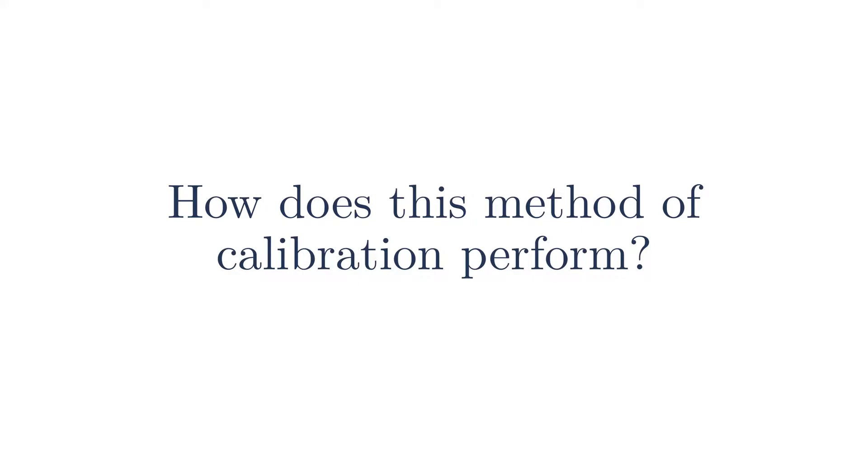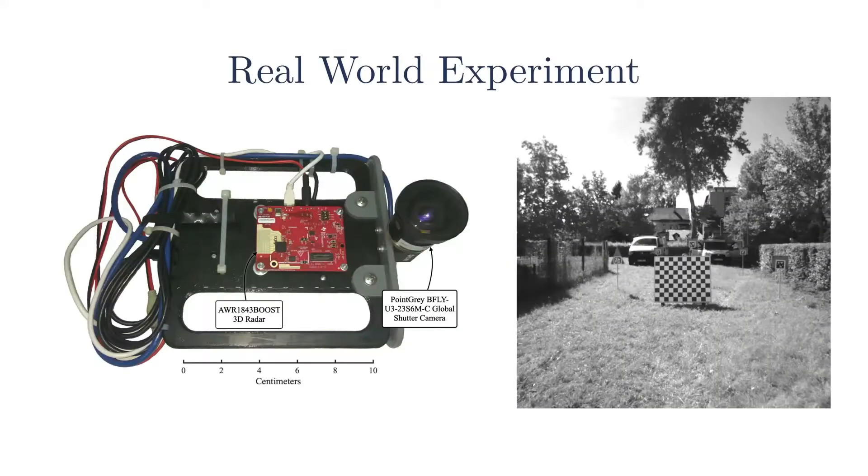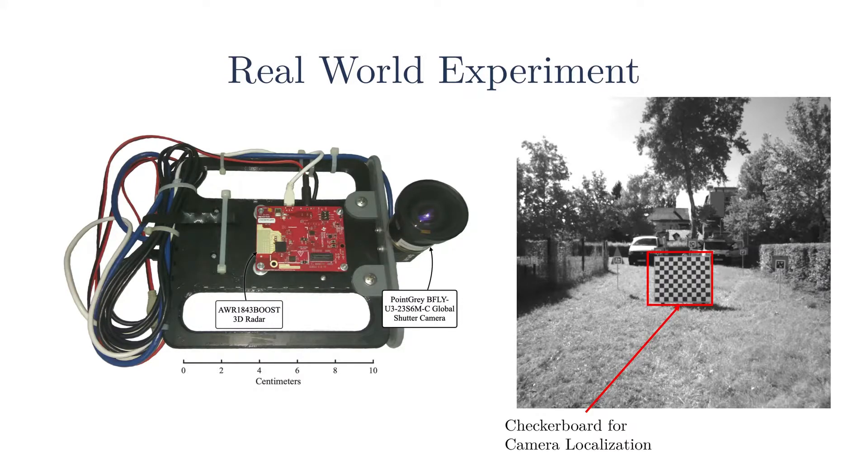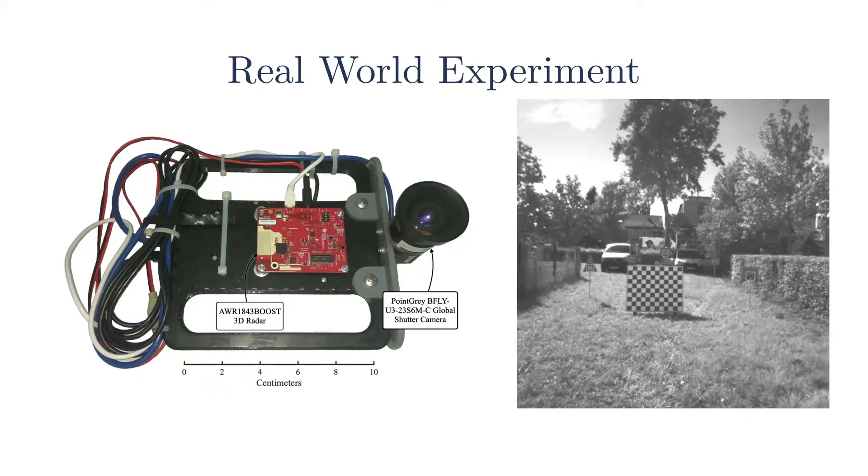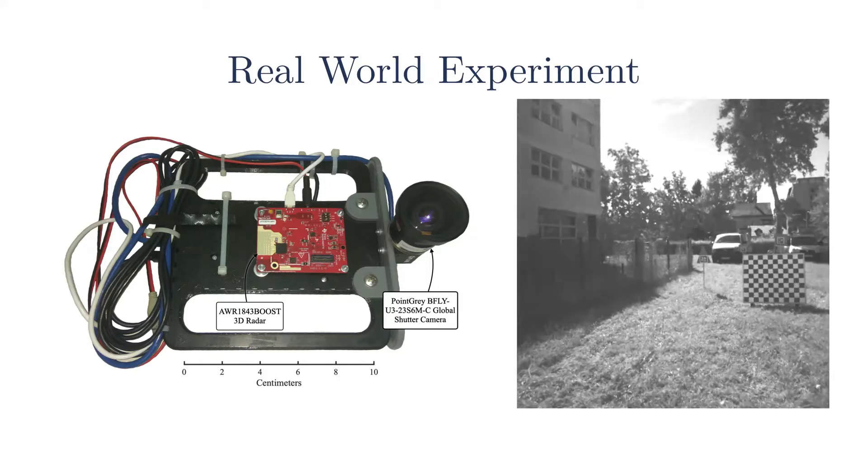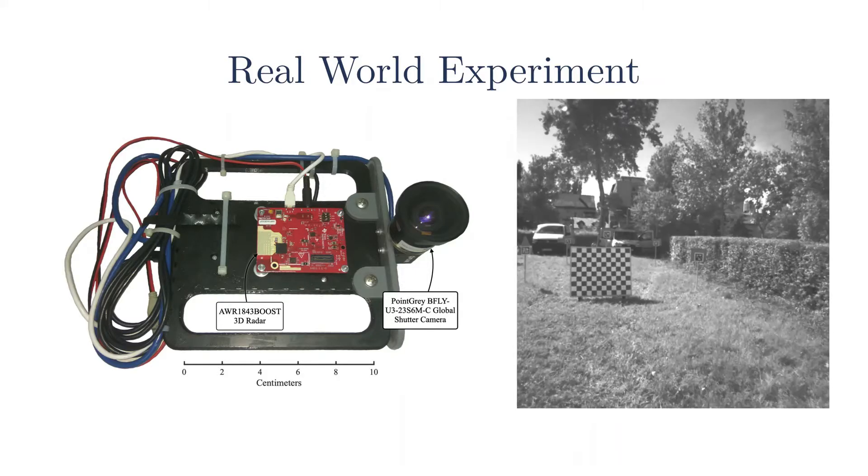Now, how did our algorithm perform in the real world? Following our synthetic experiments, we performed a series of real world experiments. The image on the left shows our experimental apparatus, which contains a Texas Instrument 3D radar and a Point Grey V-Fly camera. Our test environment consists of a checkerboard for camera localization and a set of radar trihedral specialized targets. The trihedral targets enable us to compare our algorithm to a state-of-the-art point-based reprojection method. I would like to emphasize that our algorithm does not make use of these targets. In addition to ensuring a suitable testing environment, we ensure that the system experienced motion satisfied the excitation requirements highlighted in our degeneracy analysis.